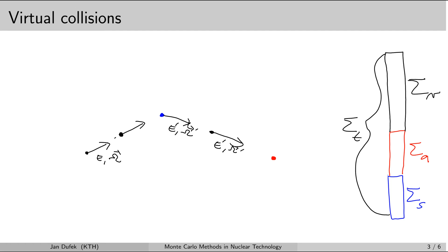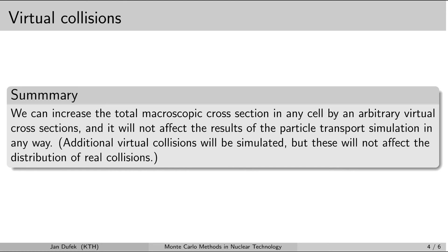We are going to see in the next lesson that this is going to be very useful. As a summary: we are free to increase the total macroscopic cross-section in any cell by any arbitrary virtual cross-section, and it will not affect the results of the neutron transport simulation in any way. And that is all for now. Have a nice day.